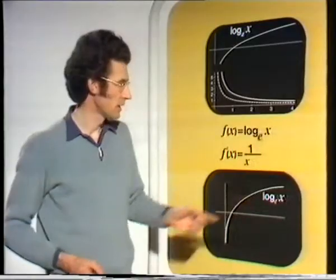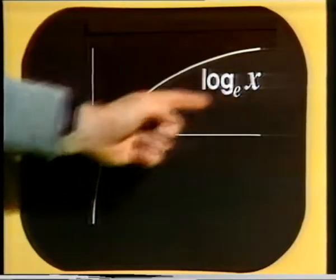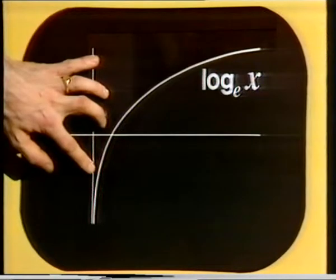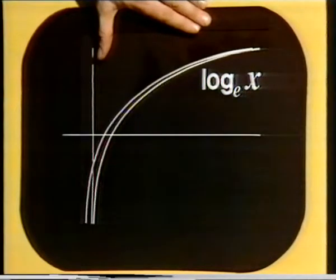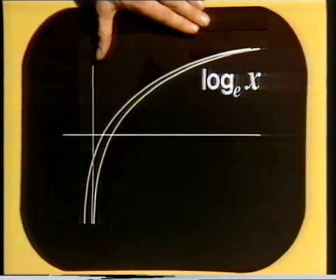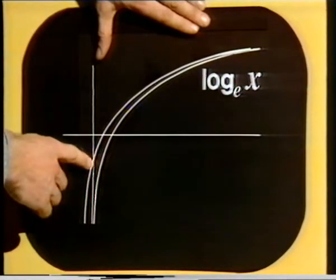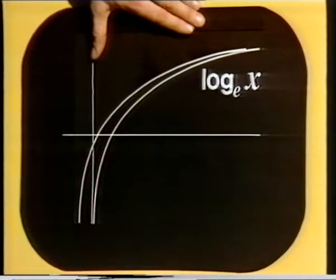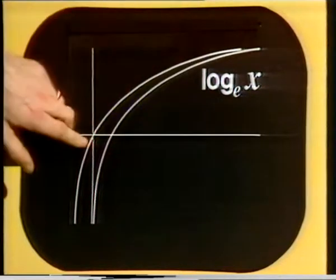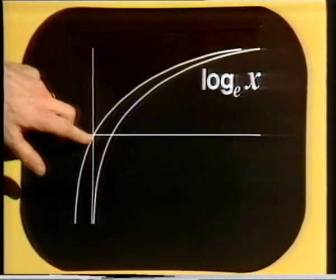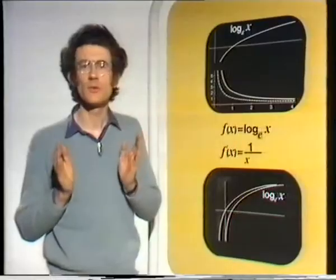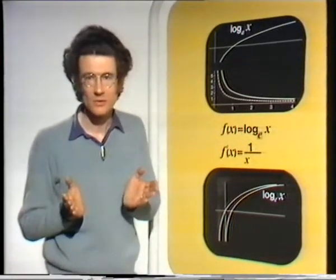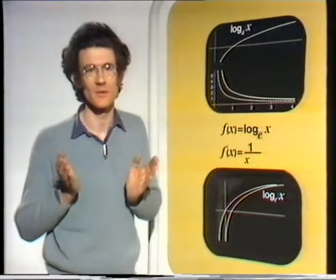We'll have a little problem with log to the base e of x when looking for its Taylor polynomial, because the first term is f of 0, and log to the base e is not defined at 0. We can get over that by translating the function — translating doesn't change the function very much, but it produces a function which is well defined at 0. We translate until the function passes through the origin, so the first Taylor polynomial term is 0. This is the graph of log to the base e of 1 plus x, and we need to look at the Taylor polynomials of log to the base e of 1 plus x to calculate values of log to the base e.